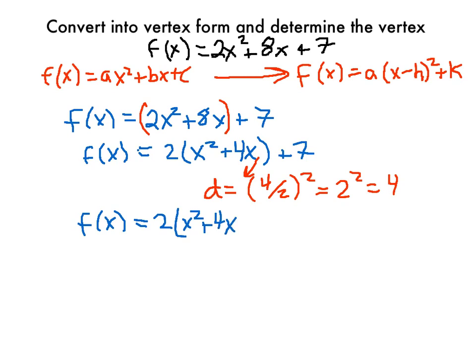So x squared plus 4x, I found that value of d. So that's where I'm going to put that right here. That's the missing piece that forms a perfect squared trinomial. Plus 7. Now again, before, we would have just added that to both sides. But you have to be careful here.